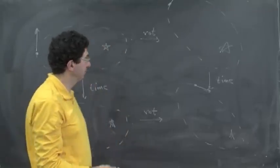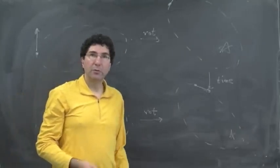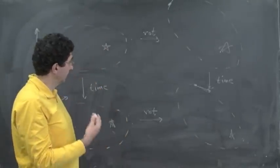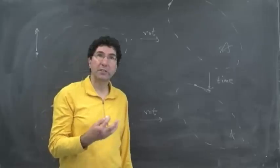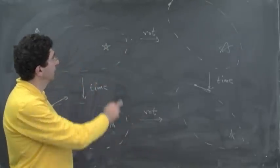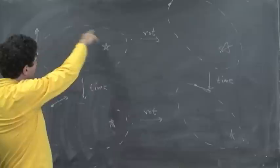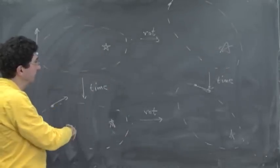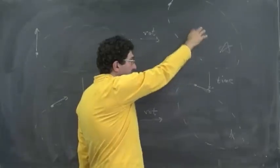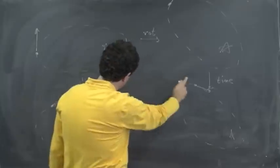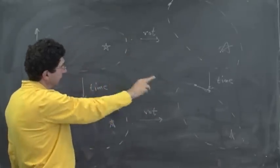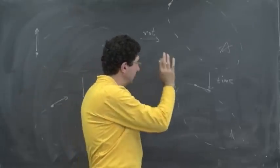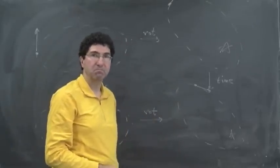This is called a commutative diagram. So you get the idea that in classical physics, a symmetry is a transformation that always takes a solution to a solution. If I have a solution where the planet is rotating around in time, and I rotate the system, I get another solution — they're related by the rotation at every time, not just at one moment. So a rotation takes solutions to solutions in classical physics.